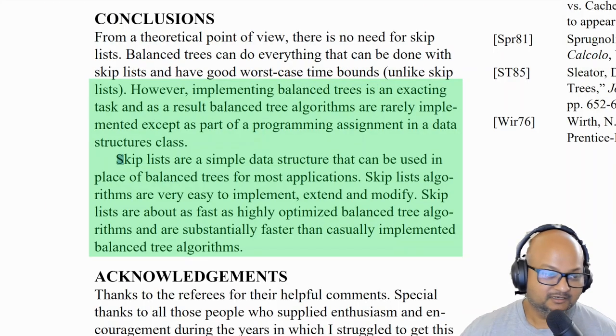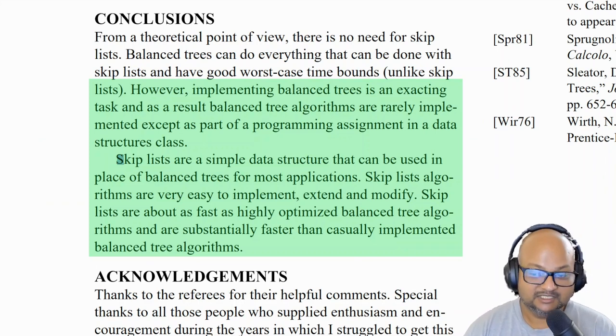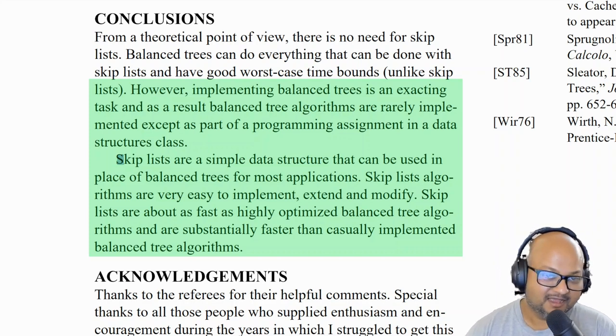So that was a quick look at the paper that proposed the skip lists data structure, which is a simple data structure that can do all the things that balanced trees can do for most applications. But it does so in a probabilistic manner and is also much easier to implement compared to balanced trees. I hope you enjoyed that and I will see you next time. Thank you very much.